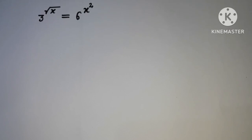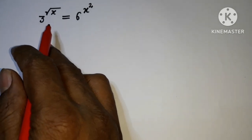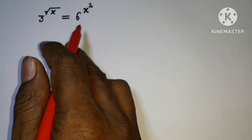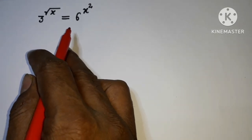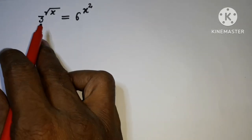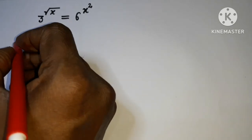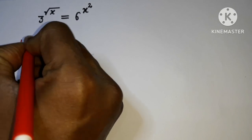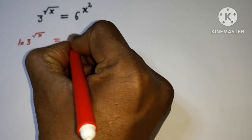Welcome back to Triple X Learning. Today we have this question on your screen: 3 to the power root x equals 6 to the power x squared. This can be solved by taking ln on both sides, so I'm taking ln of 3 to the root x and ln of 6 to the x squared.